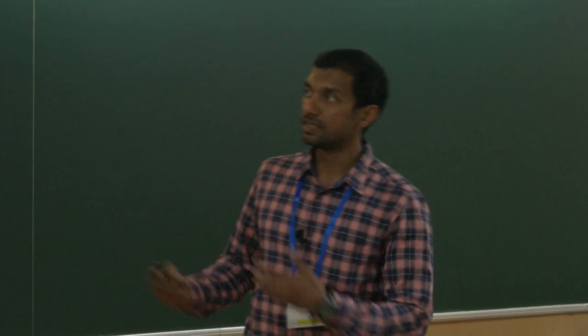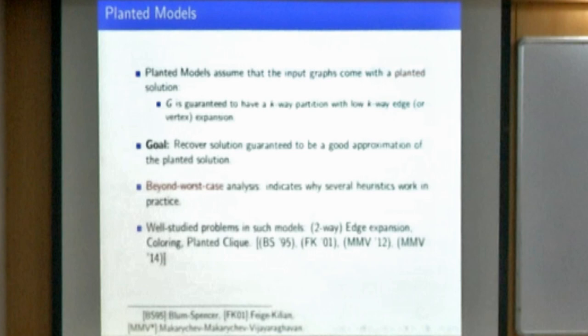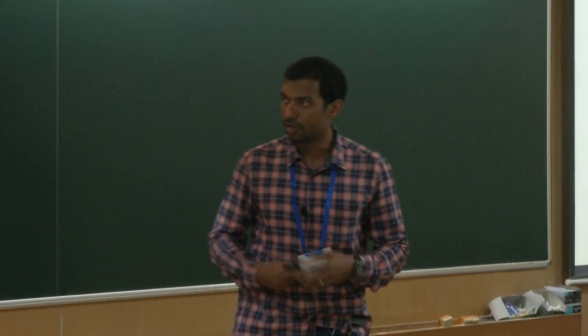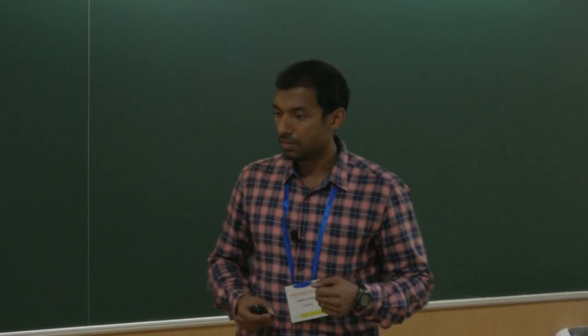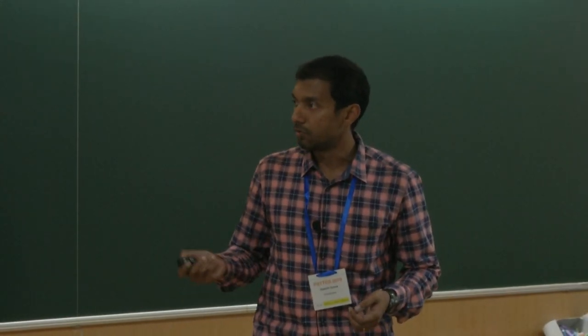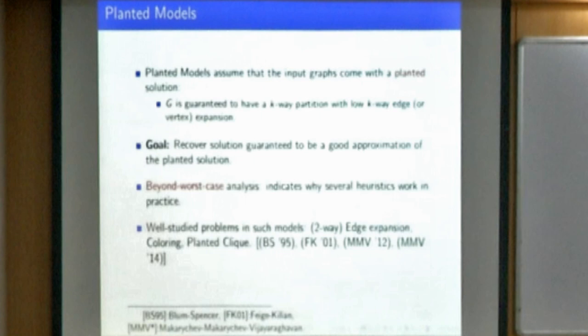When I said input instances are naturally clustered in some sense, the kind of models we consider in this work are planted models. In planted models, the input graph G is guaranteed to have a k-way partition with low k-way edge or vertex expansion, and the goal is to recover a solution that is guaranteed to be a good approximation of this planted solution. This kind of analysis is often called beyond worst-case analysis, and usually this yields some insights into why well-known heuristics work in practice. Many problems have been studied in such models — two-way edge expansion, colouring, planted cliques and so forth — but the k-way vertex and edge expansion is kind of new in this sense.